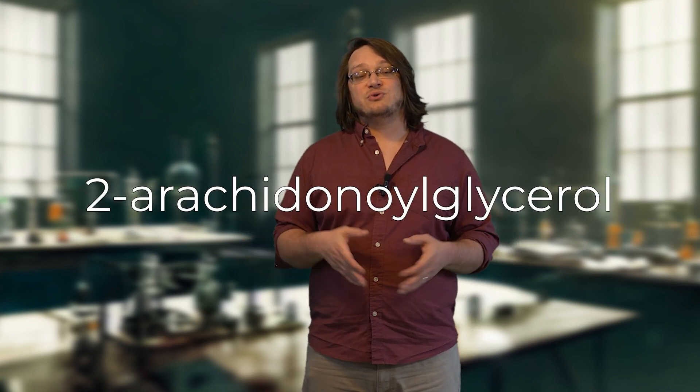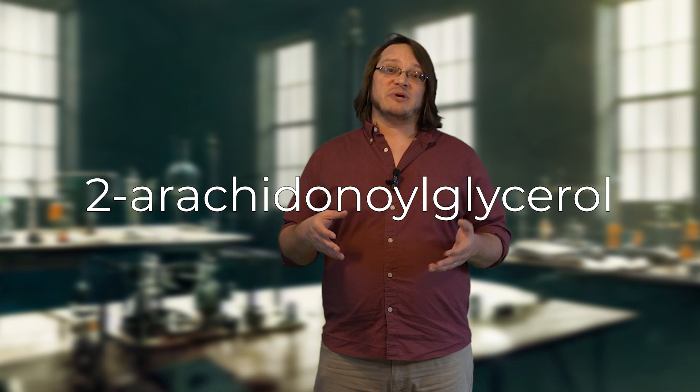But the plot thickens. After anandamide was discovered, researchers discovered another endocannabinoid called 2-AG, or 2-arachidonyl glycerol. This compound actually turns out is more abundant in the body, or at least in the brain, than anandamide tends to be, and it tends to be more of a potent agonist or stimulator of CB1 and CB2 receptors than anandamide.